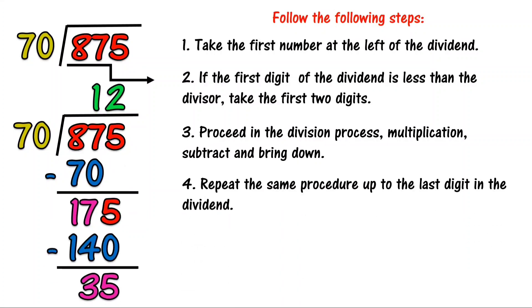Fourth, repeat the same procedure for the last digit in the dividend. 175 divided by 70 equals 2. 2 times 70 equals 140.